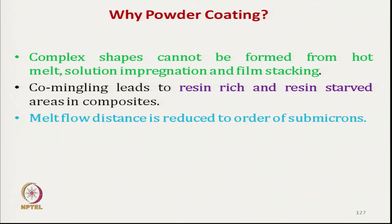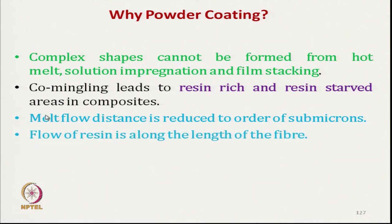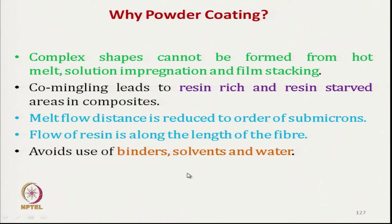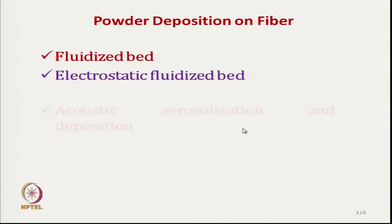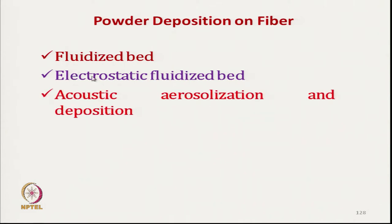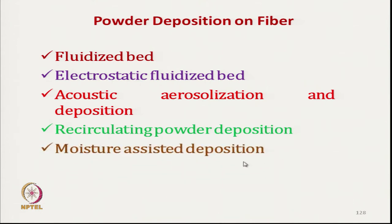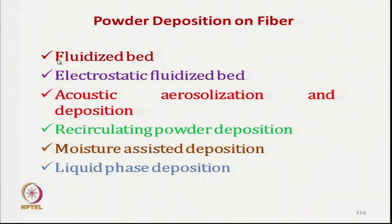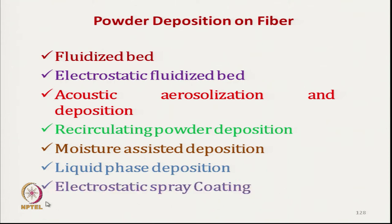Here the melt flow distance is reduced to a submicron level — in fact, no melt flow distance across the cross-section is required; flow is along the length. No binder, solvents, or water are used. The techniques discussed include fluidized bed, electrostatic fluidized bed, aquatic aerosolization and deposition, recirculation powder deposition, moisture-assisted deposition, liquid phase deposition, and electrostatic spray coating.